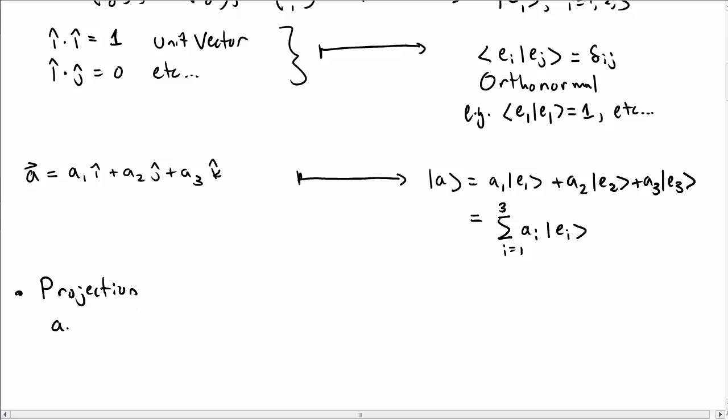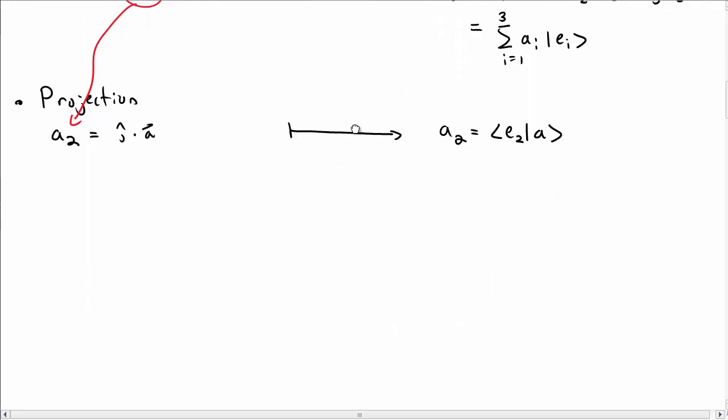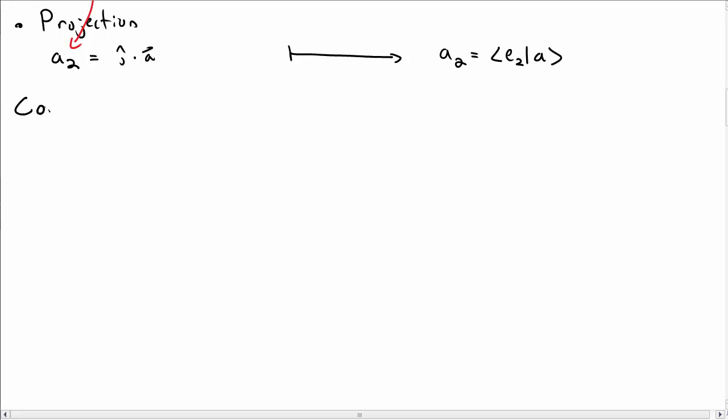We can talk about projection. If I want the a2 component of my vector a, I would take j-hat dot my vector a. I can do a similar thing in Dirac notation. I can take bra e2 with a, or rather inner product e2 with a. That also projects out a2.